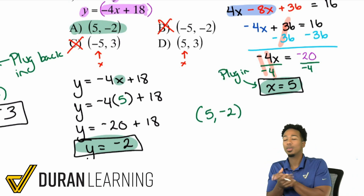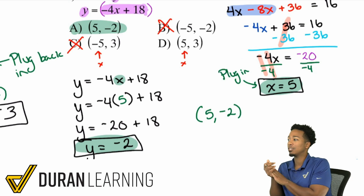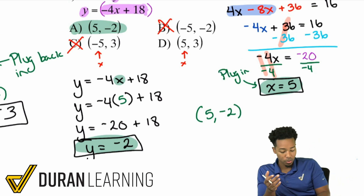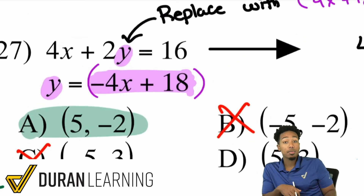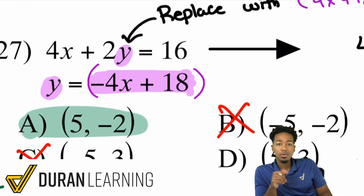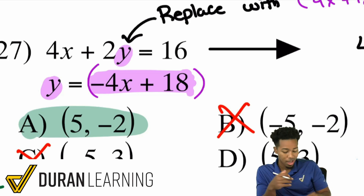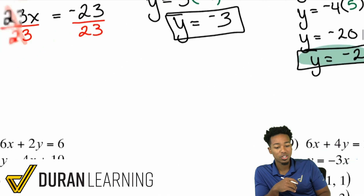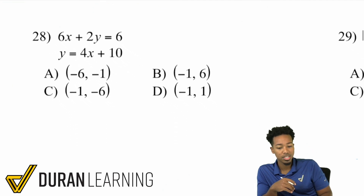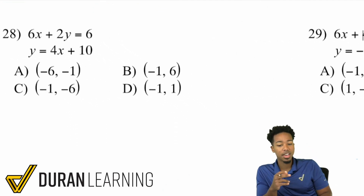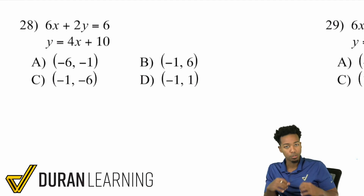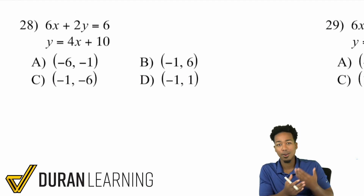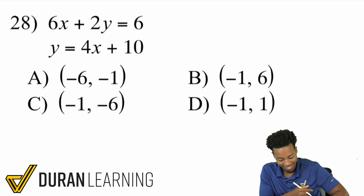The key idea here is procedural: if you notice that one variable is already by itself, substitute its value into the other equation. That way you're dealing with one variable instead of two, and you can solve. Let's check out a couple more examples. I'll do number 28 and then number 29, and then you'll work on the worksheet and speed drills.